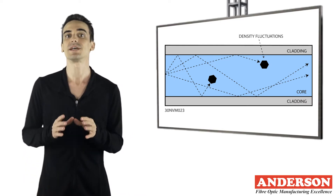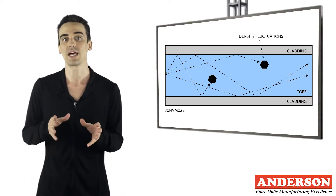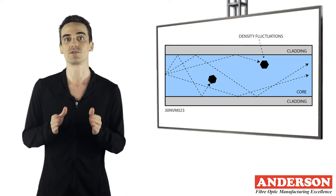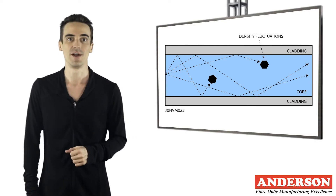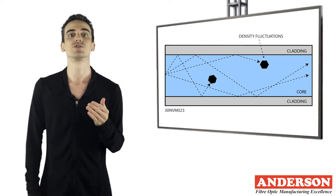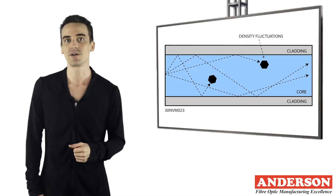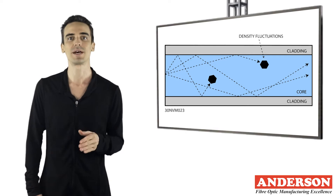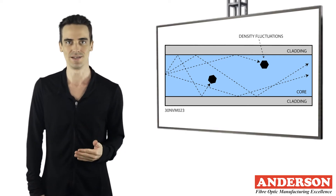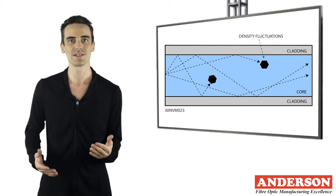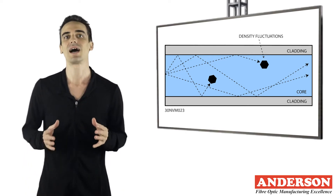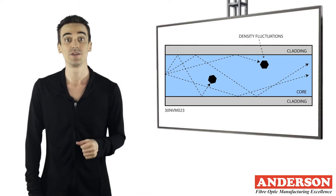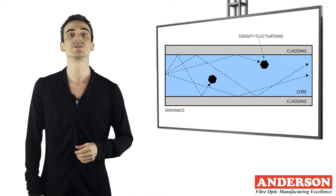As fiber optics is a light-based technology, there will always be attenuation or light loss — the further light travels down the fiber. Knowing and understanding what causes this attenuation and how to best minimize it will assist in providing the highest quality installation. In this video, we discuss absorption and its main causes.